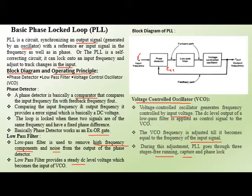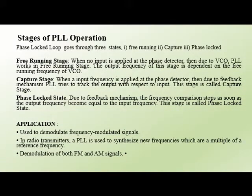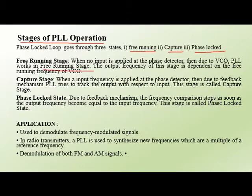The first stage is free running. When no input is applied at the phase detector, the PLL works as a free running stage and the output frequency depends on the free-running frequency of the VCO. The second stage is the capture stage. When an input frequency is applied at the phase detector, due to the feedback mechanism, the PLL tries to track the output with respect to the input — this stage is called the capture stage.